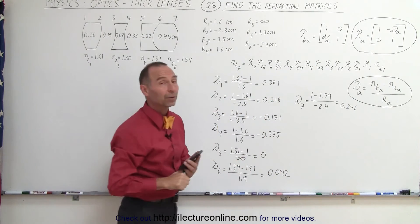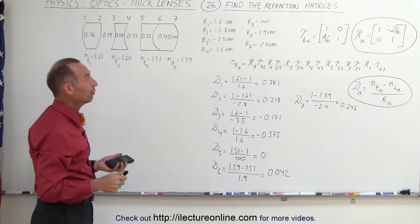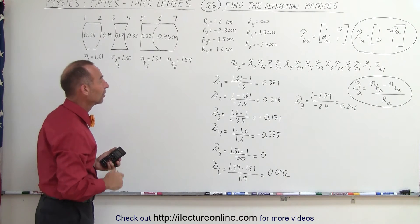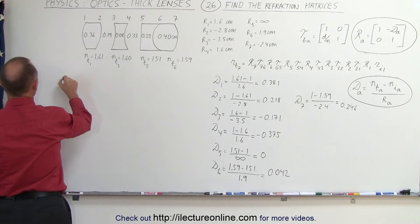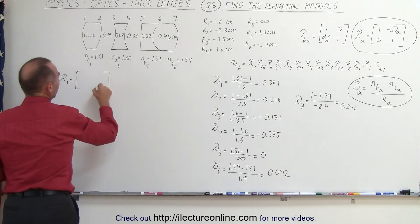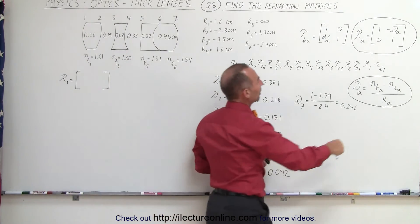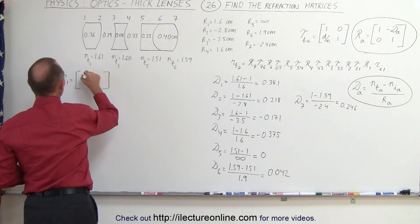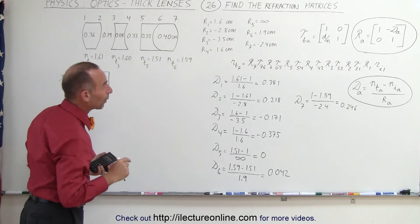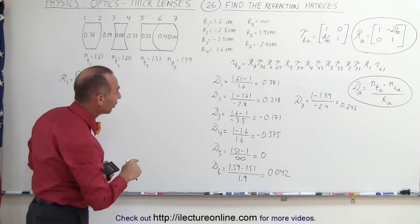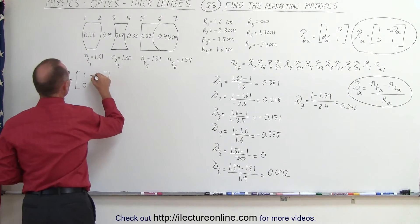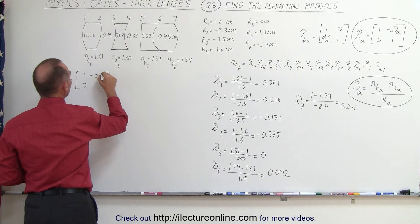So now we have the powers of each of the seven surfaces. We are now ready to come up with each of the seven matrices. Let's start with R1. Notice that three of the elements are really easy to get. They're always 1, 1 across diagonal and 0 in the bottom left corner, and then in the top right corner is the negative of the power. So in this case, that would be negative 0.381.